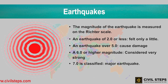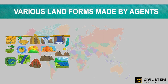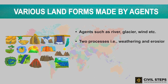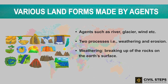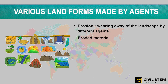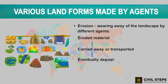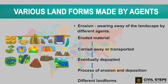The third aspect is the various landforms made by agents. The landscape is continuously formed with the help of agents such as rivers, glaciers, and wind by two processes: weathering and erosion. Erosion is the wearing away of the landscape by different agents like water, wind, and ice, whereas weathering is the breaking up of rocks on the earth's surface. The eroded material is carried away by water, wind, etc., and eventually gets deposited, creating different landforms on the surface of the earth.